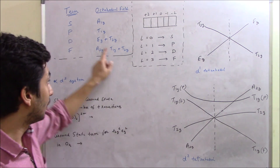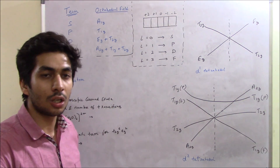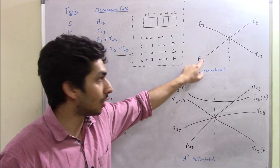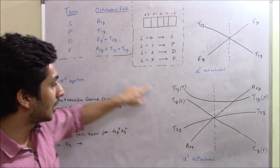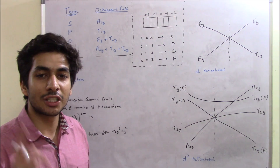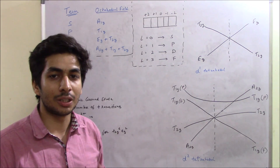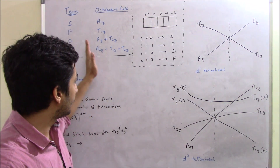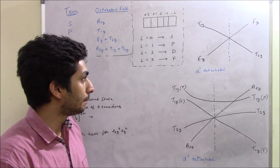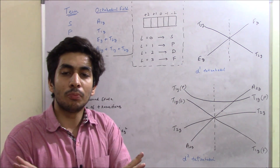If you get the D term, it corresponds to one diagram, and the F term corresponds to the other diagram. For whichever transition metals give the F term, use the F diagram; for those giving the D term, use the D diagram. You will only get D term or F term in the ground state.